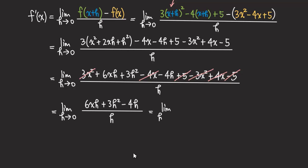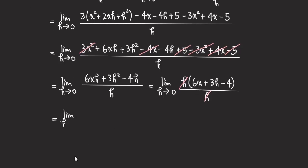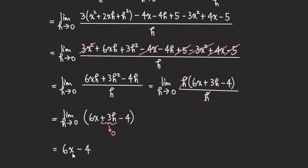We can factor out the h and we get six x plus three h minus four. And then with the h at the bottom, we cancel them. So we have a new limit: six x plus three h minus four. Now we can plug zero in for h, since h is approaching zero, and we simply get six x minus four. That's our derivative function, f prime of x.